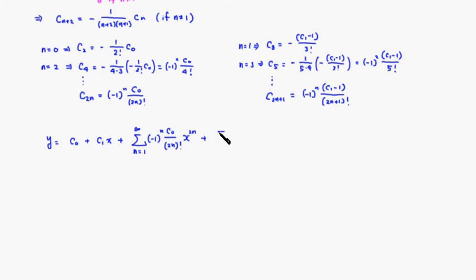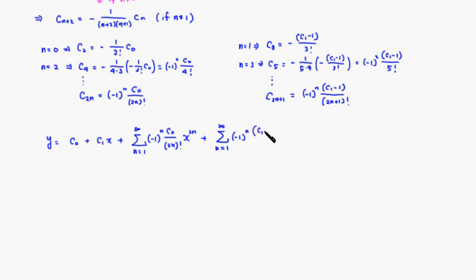The odd terms start from x cubed (n equals 1 gives 2n+1 equals 3), so the summation goes from n equals 1 to infinity of negative 1 to the n times c1 minus 1 over 2n plus 1 factorial times x to the 2n plus 1.